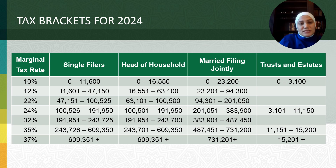A trust is subject to the 37% rate after reaching only $15,200 of income. This seven-rate structure is scheduled to automatically phase out on January 1, 2026.